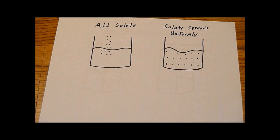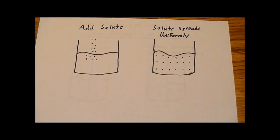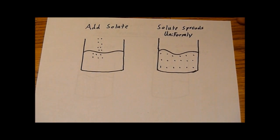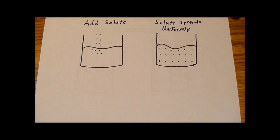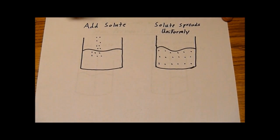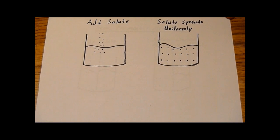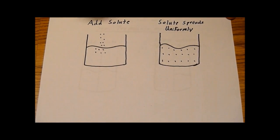First we're going to go over a little bit of background. So when you add a solute to some solvent, in this case we're going to be using water as our solvent and corn syrup as our solute, it tends to spread uniformly.